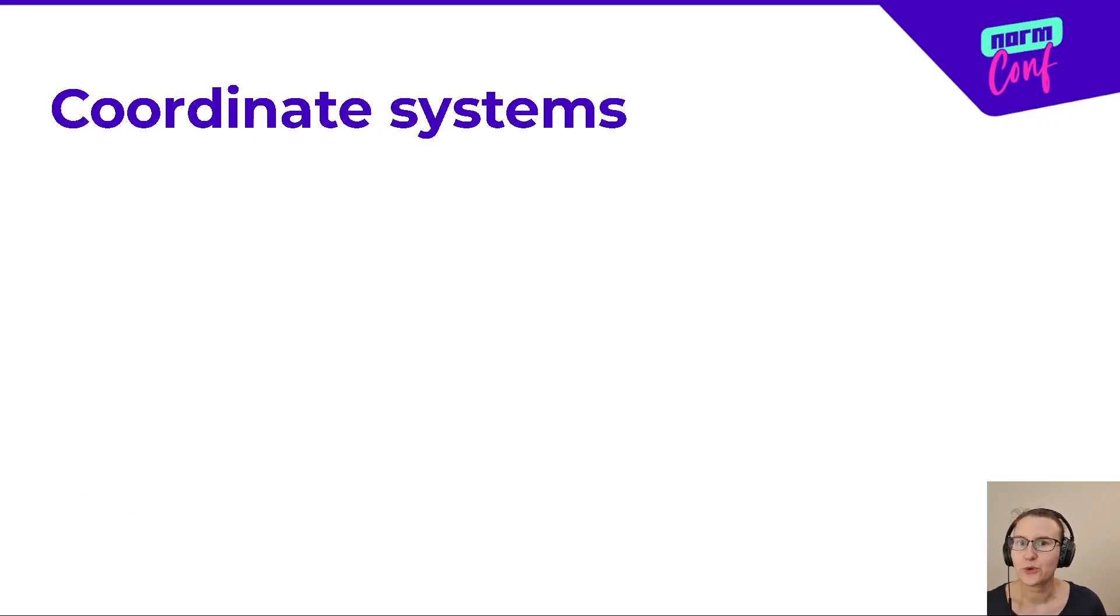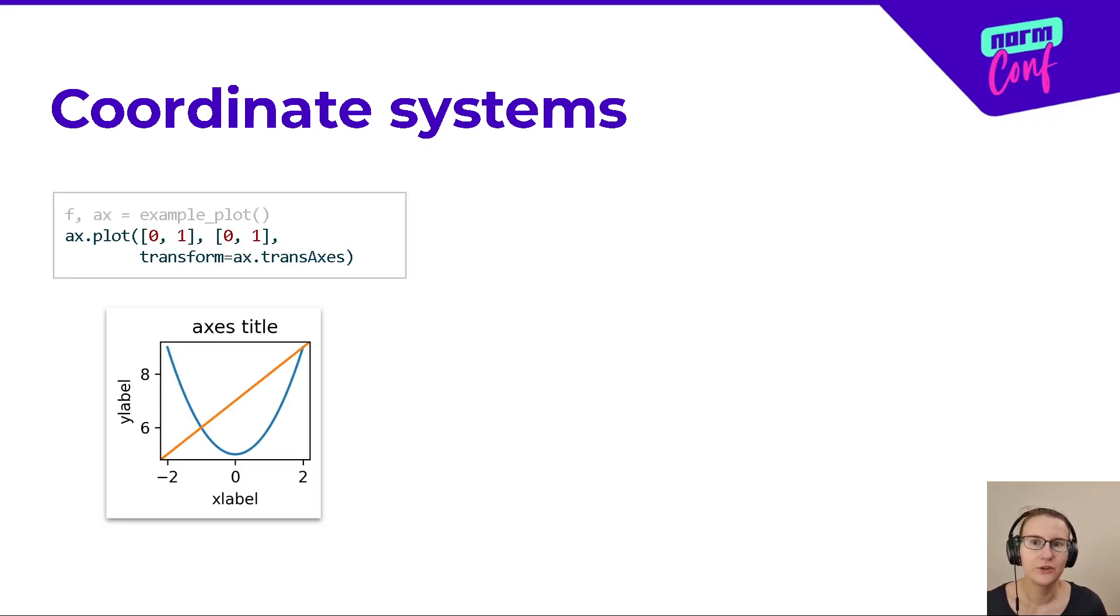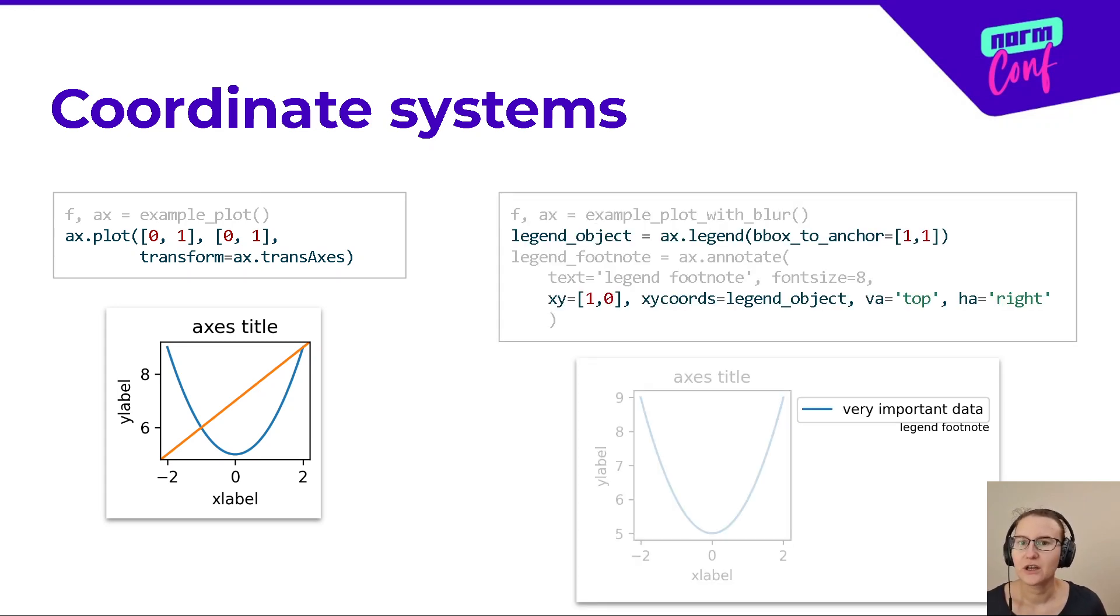Sometimes it is easier to draw things on charts in other coordinate systems, not using the data values. For example, you can draw lines from 0 to 100% of the chart range. And to position an annotation, you can use data coordinates, relative coordinates, or even coordinate systems of other artists like the legend here.